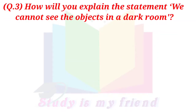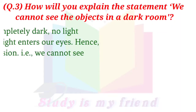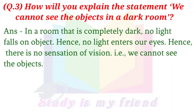Question 2.7: How will you explain the statement: 'We cannot see the objects in a dark room'? Answer: In a room that is completely dark, no light falls on the object. Hence, no light enters our eyes. Hence, there is no sensation of vision. That means we cannot see the objects.